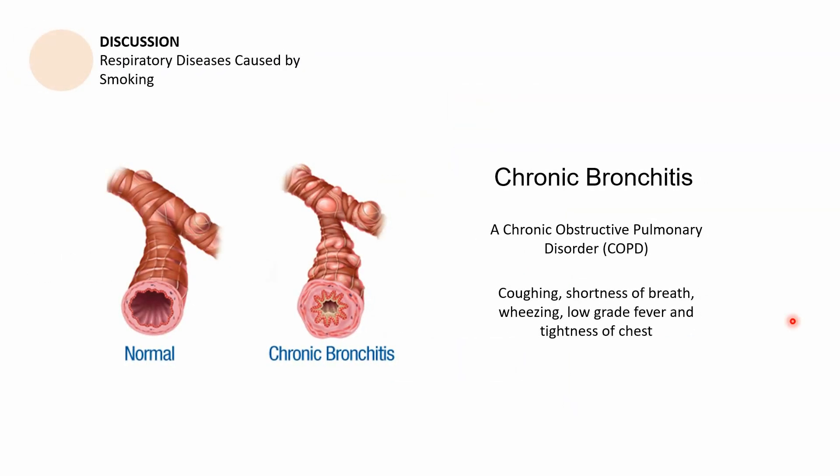The second part of this session is a discussion regarding the diseases caused by cigarette smoking, respiratory and circulatory diseases. Let us begin with chronic bronchitis. Remember, more often than not when the disease ends with 'itis' it is an inflammation. Chronic bronchitis is considered a chronic obstructive pulmonary disorder or COPD. It is characterized by the following symptoms: coughing, shortness of breath, wheezing, low-grade fever, and tightness of chest.